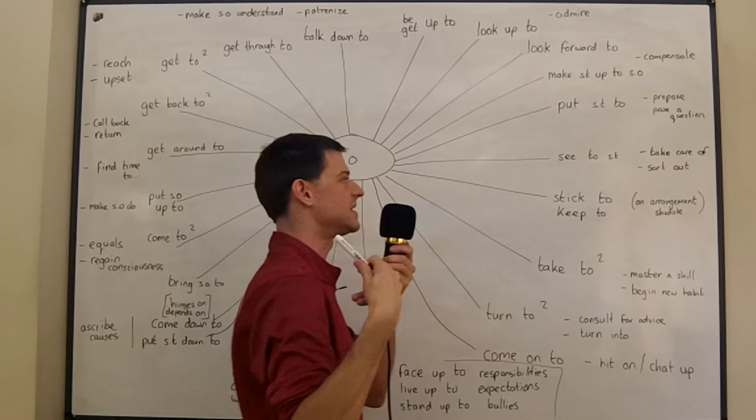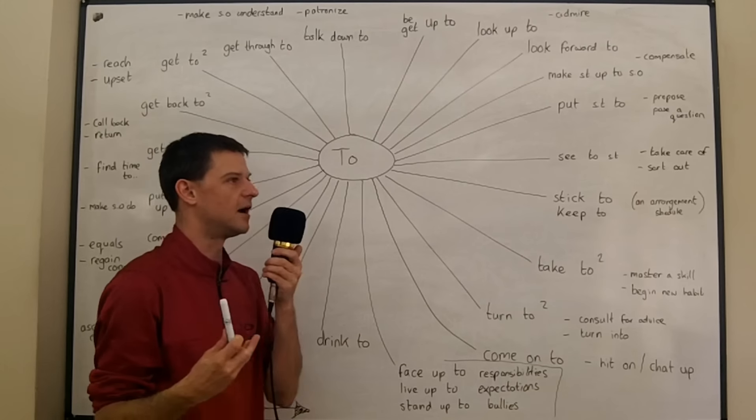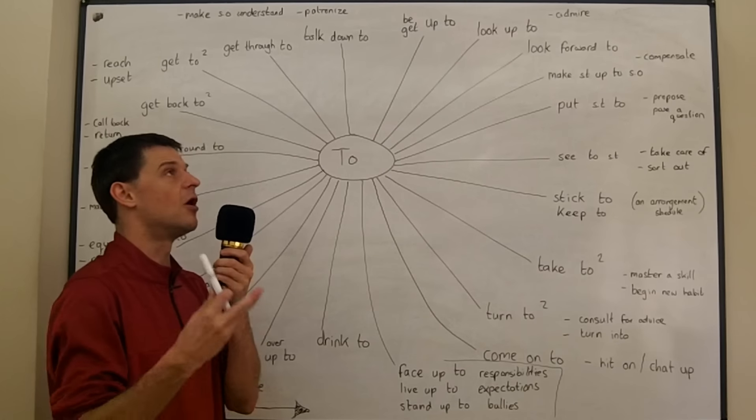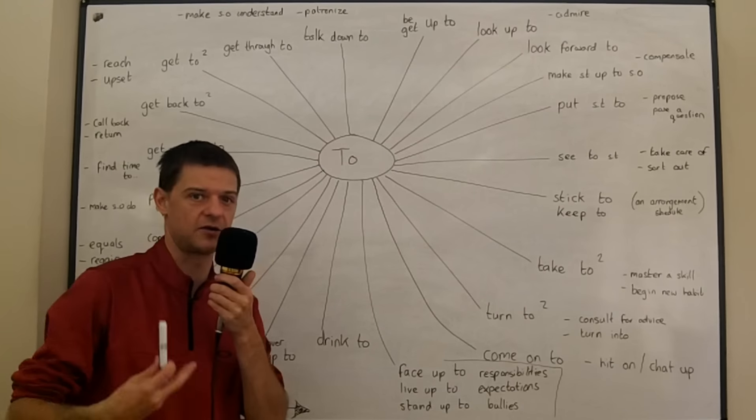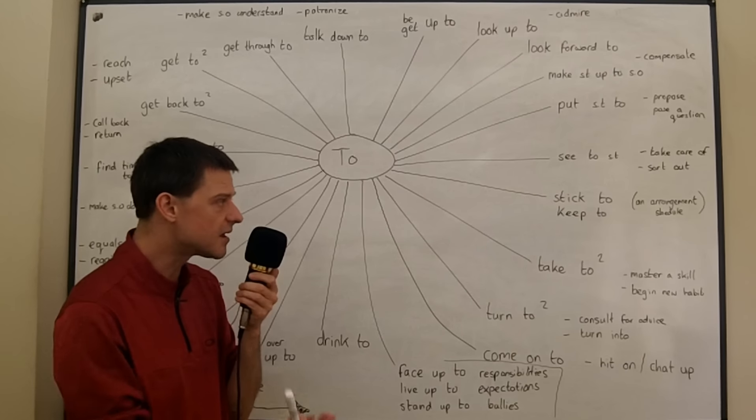And you could even see to someone meaning take care of someone. If you are seeing to your auntie it means you're looking after your auntie in some kind of way, you're taking care of her, taking care of her needs.